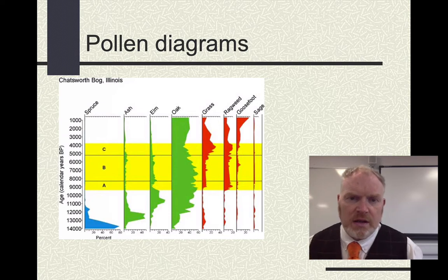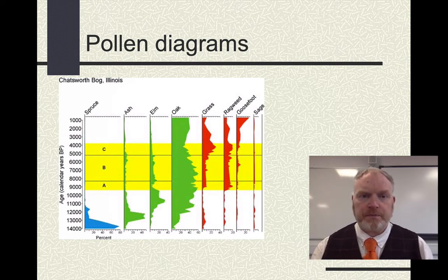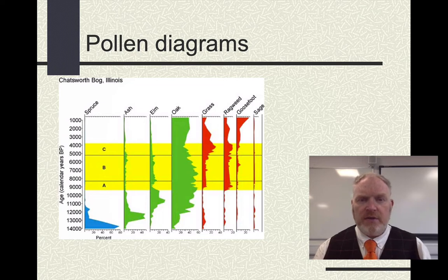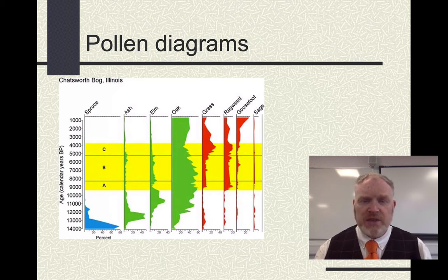This is our first pollen diagram. This is from Chatsworth Bog in Illinois, and we can see we've got a span of ages that stretches back to pretty much the end of the last glacial period.